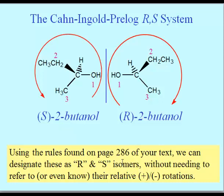You can look on page 286 for examples, but the way we've labeled this one on the left is by atomic number of what's directly connected to the chiral carbon. We used atomic number when talking about E and Z as well. So the oxygen in the OH group outranks the carbon in the ethyl group, which outranks the carbon in the methyl group, and all three outrank the hydrogen.